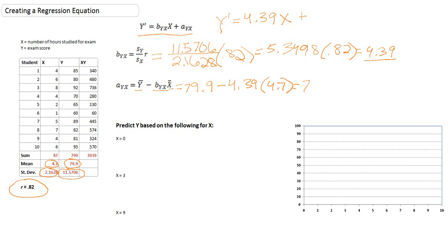Reducing that down, we still have 79.9 minus 4.39 times 4.7. Those two numbers multiplied together equals 20.633. Now we just have one last calculation to do and that is to subtract 20.633 from 79.9. And the result is 59.27. This is our y-intercept.